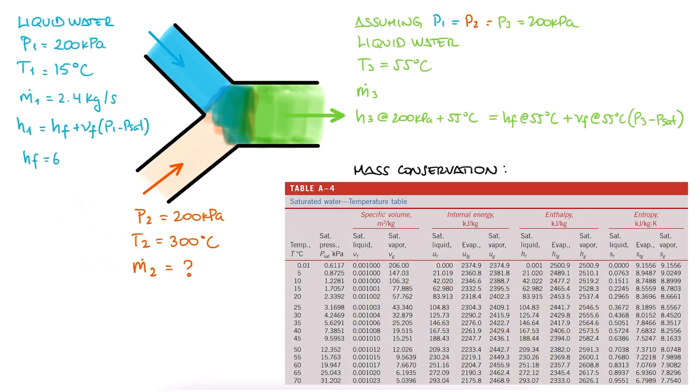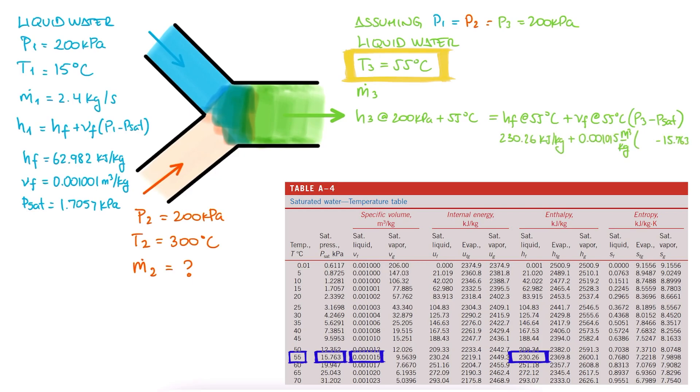Therefore, for inlet 1, we write down hf, vf, and the saturation pressure at 15 degrees Celsius, and for exit 3, we write down hf, vf, and the saturation pressure at 55 degrees Celsius.